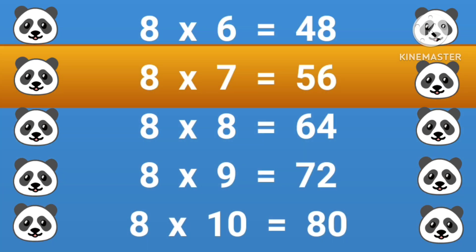8 times 7 equals 56, 8 times 8 equals 64, 8 times 9 equals 72, 8 times 10 equals 80.